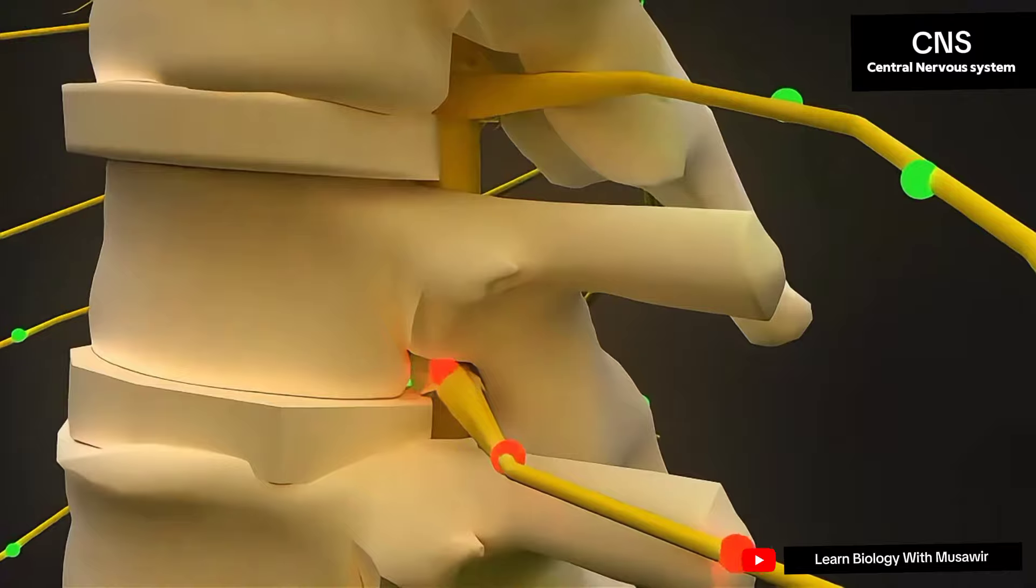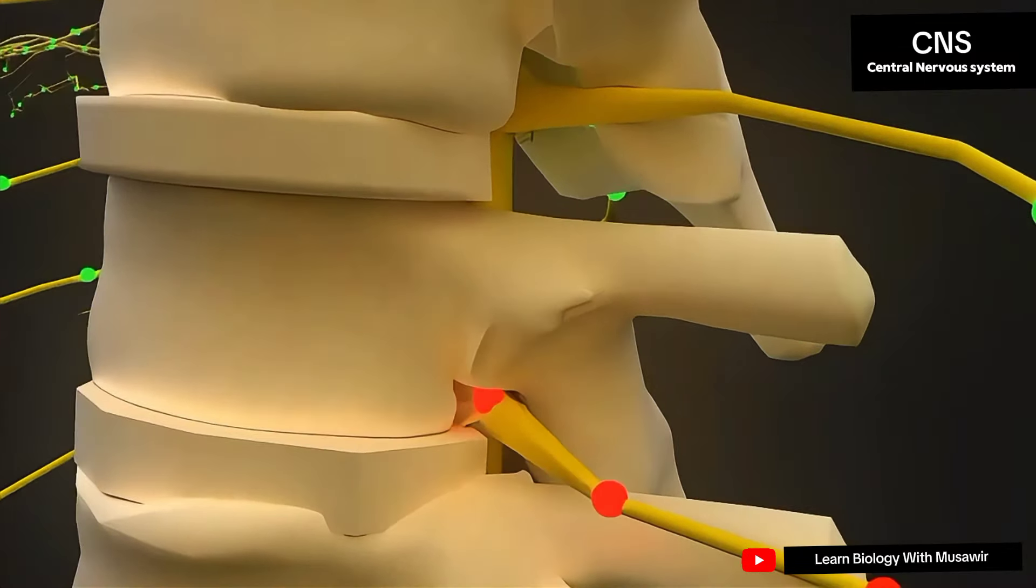your vertebrae can then press on these exiting spinal nerves and interfere and block these nerve impulses. When this happens, nerve damage begins and your body starts to dysfunction.